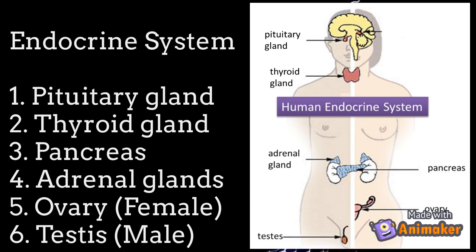The human endocrine system consists of the following glands: pituitary gland, thyroid gland, pancreas, adrenal glands, ovary for female, and testis for male. As you can see in the diagram given, these are the locations of each gland in the human body.